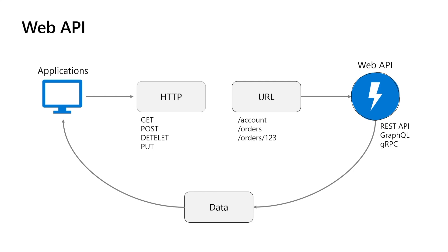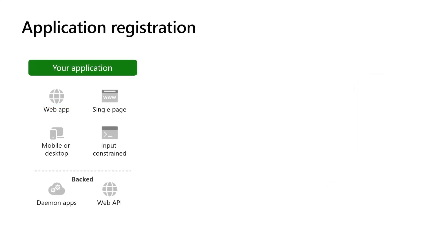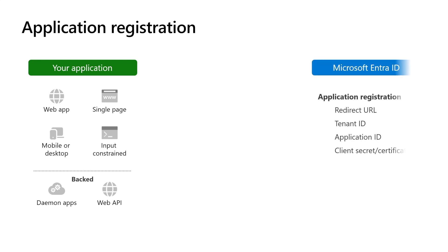Daemon apps can also invoke a web API. Since there's no signed-in user, they can call a web API with the application's identity, using application permissions on behalf of the application itself. To enable authentication for your application, you need to register the application in the Microsoft Entra External ID tenant. It establishes a trust relationship between your application, web APIs, and Microsoft Entra External ID. Think of it as a one-stop shop — a central place to securely manage your applications and APIs.